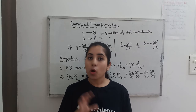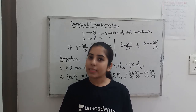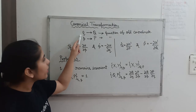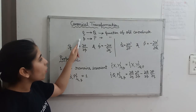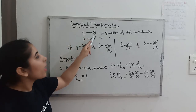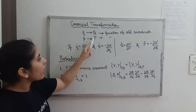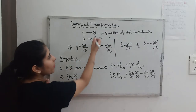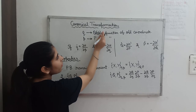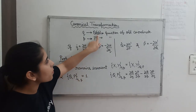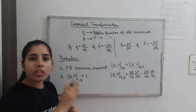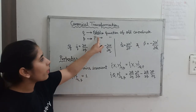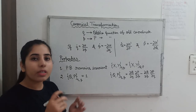Let's have a look at this point. We have position coordinate q and momentum coordinate p. The new coordinates — capital Q and capital P — are functions of the old coordinates, so we can write them as functions of q and p. In general, if we have q1, q2, q3 and p1, p2, p3, and there can be other parameters as well, we write them in a generalized way. But for now, let's consider just one set of coordinates.